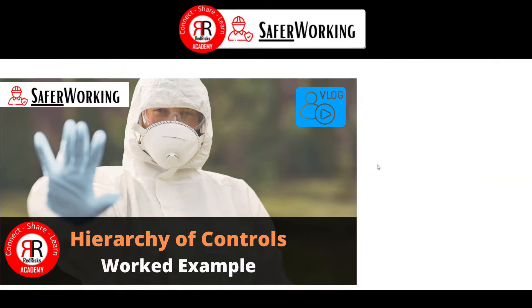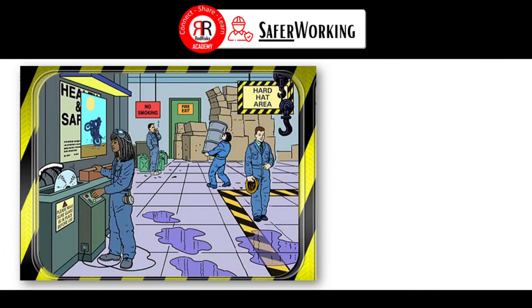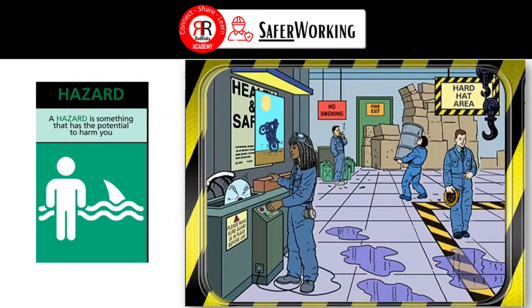In this video we're going to look at the hierarchy of control, specifically looking at a worked example. This is quite a famous image that people have tended to use in training sessions to talk about hazards in the workplace. First, let's start with defining what a hazard is: a hazard is something that has the potential to harm you.